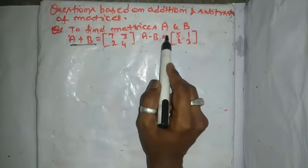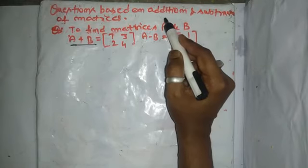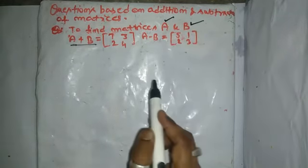And A minus B is given by the element 5, 1, 2, 3. And you have to find the matrix A and matrix B.